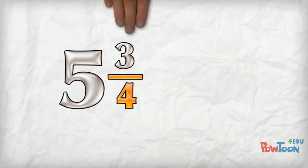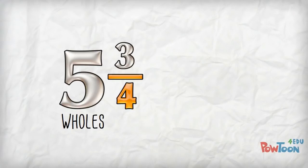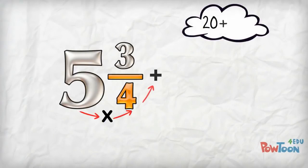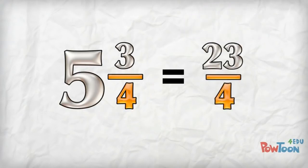5 and 3 quarters. This is 5 wholes. Each whole is worth 4 parts, as the denominator tells us. So we say 5 times 4 is 20. Add the remaining 3. That's 23 parts. Put that back over our denominator of 4. Done!